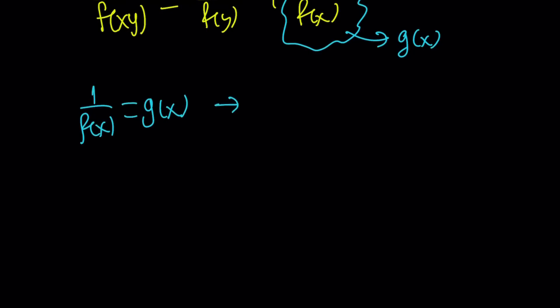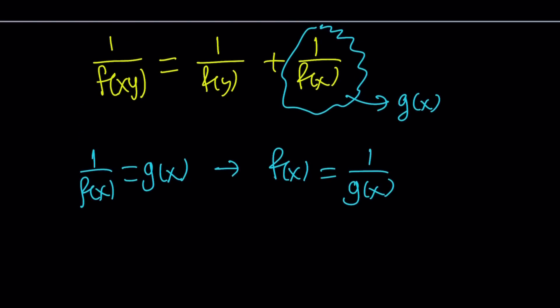And from here, we can also write isolate f of x as 1 over g of x. Of course, they're not zero in this case, right? So that's really good because first of all, it kind of simplifies this reciprocal thing, but also simplifies the whole thing.